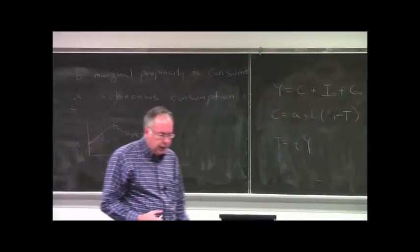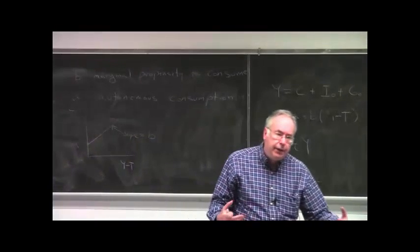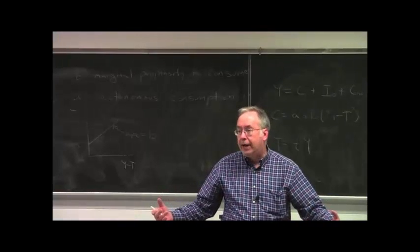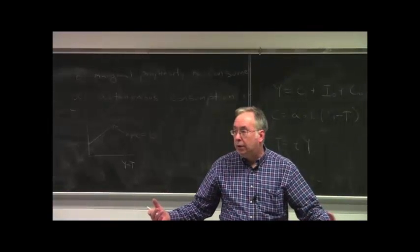And as I said, it's just the slope of this consumption function. And in words, what it is is if consumers have an additional dollar of national income, they would spend this fraction B on consumption.